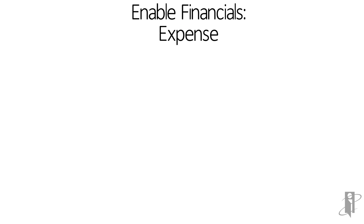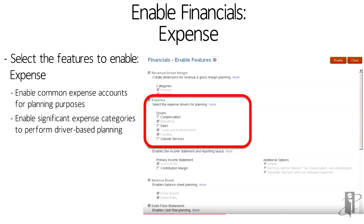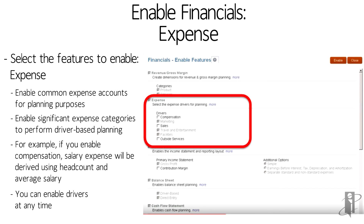In the expense planning section, this is where I would turn on which libraries and which drivers I want to have access to. Maybe I want to turn on compensation planning — it would give me various different burden expenses such as health care costs or insurance costs related to those. Drivers you can turn on and off at any time. The dimensions you really want to get right at the beginning, but you can add on later if you wanted to — outside services, sales, and compensation. When I initially created the application, I said all I really want for expense planning, driver-wise, is marketing, travel and entertainment, and facilities.